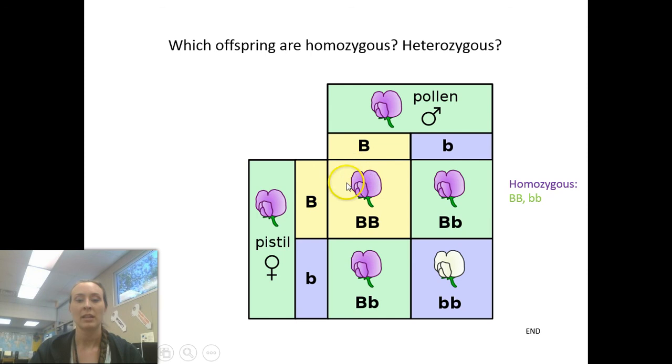The first offspring is homozygous, with two capital B's or two dominant alleles. The second one is a lowercase b and a capital B, which is heterozygous. The third outcome is a capital B and a lowercase b, which is still heterozygous. The last outcome is a white flower because it's the only outcome with two recessive genes.